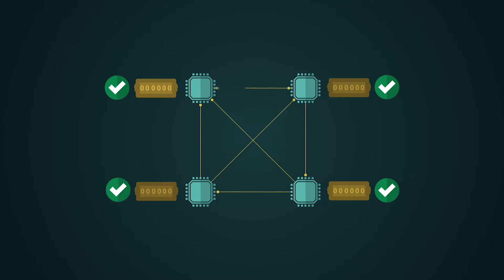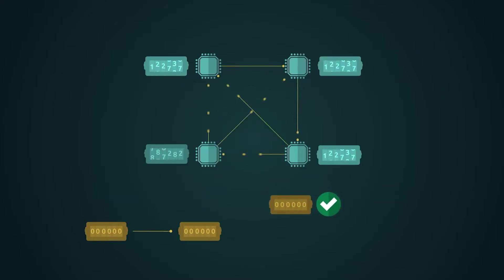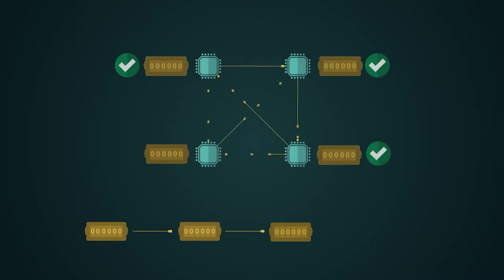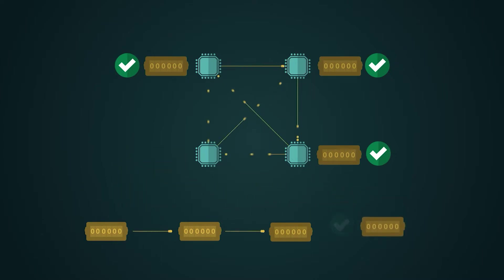Nodes work to organize these transactions into blocks that compete for addition to the chain. With the successful addition of a block to the chain, the node which produced that block is awarded the transaction fees and the block reward. Ultimately, a node is responsible for maintaining the Bitcoin network's proof of work and block publication consensus mechanism.